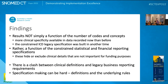My key findings: the results aren't just a simple function of the number of codes and concepts. It's more to do with that constrained statistical and financial reporting specification that was built originally. We now have much more clinical specificity available in our data than we ever had before. That constrained ICD legacy specification was built in another time and grouped together a lot of the clinical detail we now have. There will always be a clash between clinical definitions and legacy business reporting requirements. And building specifications is really hard — it's not easy to build an ECL query, and a lot of thought needs to go into it.